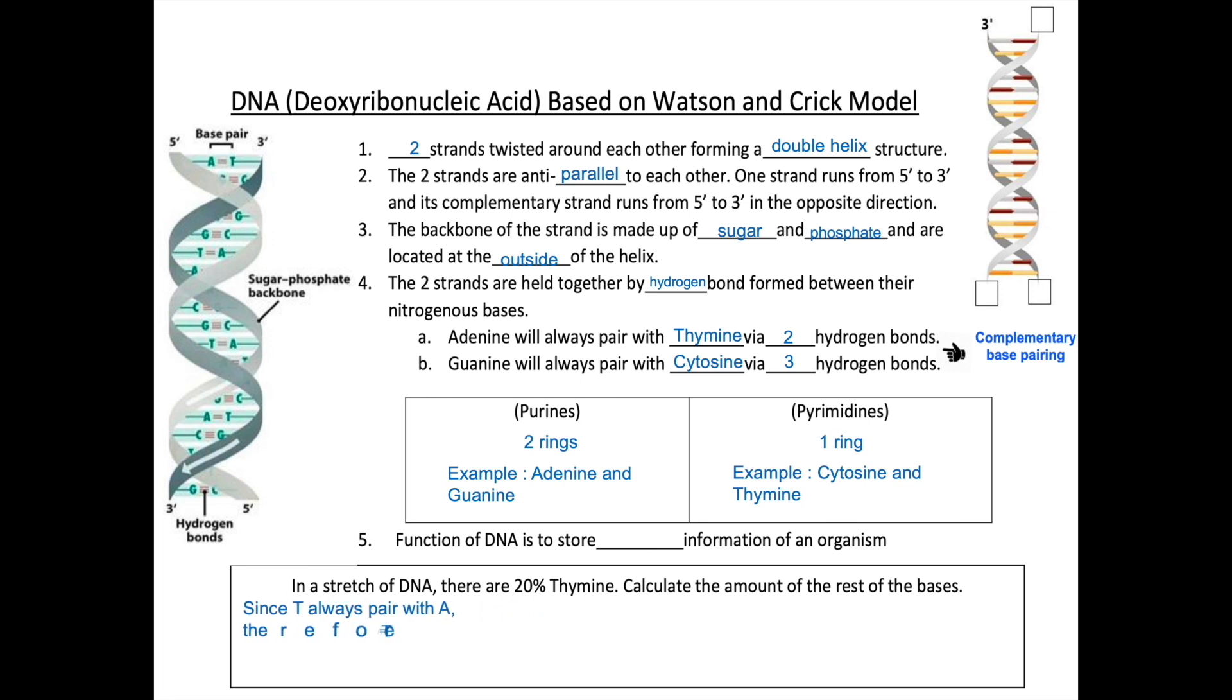Since T always pairs with A, therefore, the amount of T is equal to the amount of A. T plus A is equal to 20% plus 20%, which brings up to 40%.